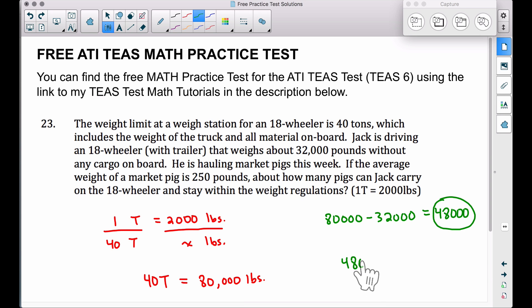The shortcut here is to take the 48,000 pounds and let's divide it by 250. Now, I'm going to show you another way right here in a second. Why am I taking 48,000 and why am I dividing by 250? 48,000 pounds is the number of pounds we have left. Each pig is 250 pounds, so we can take the weight that we have left, divide by the weight of a pig. This will give you how many pigs he can carry, and we will get a total of 192 pigs. This is our final answer.